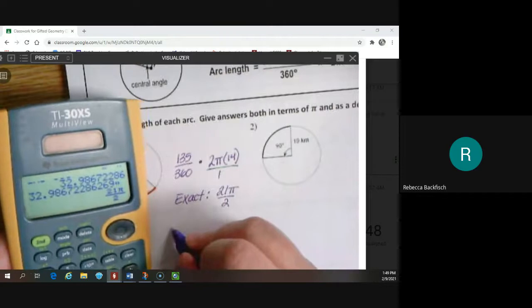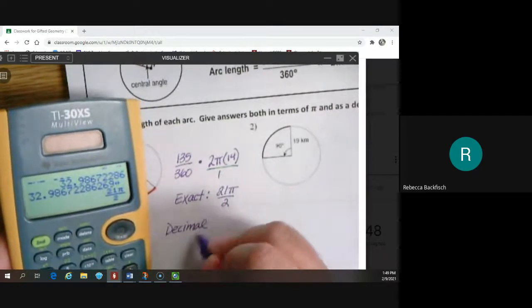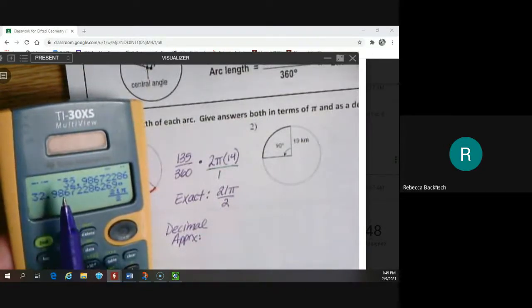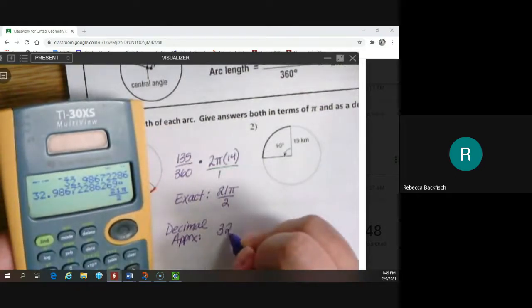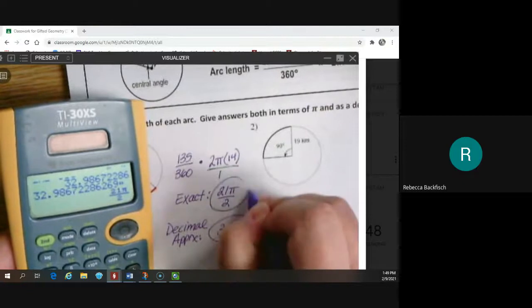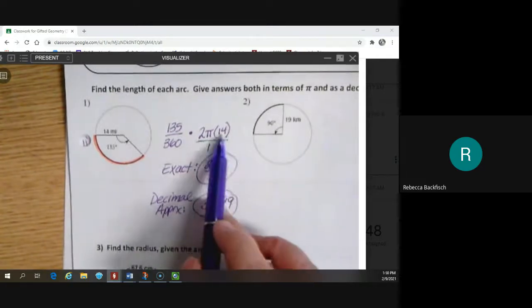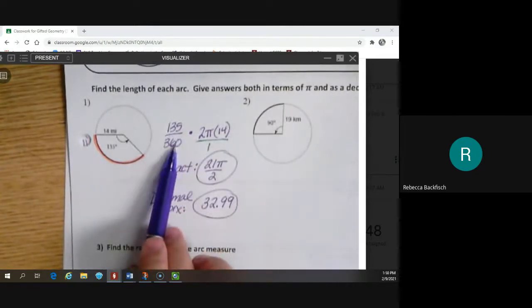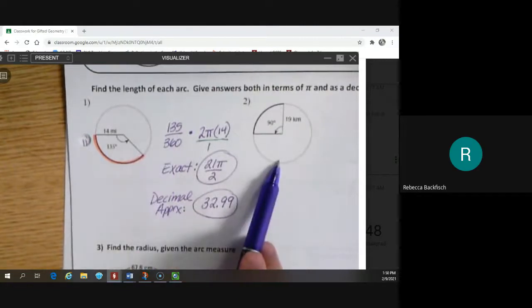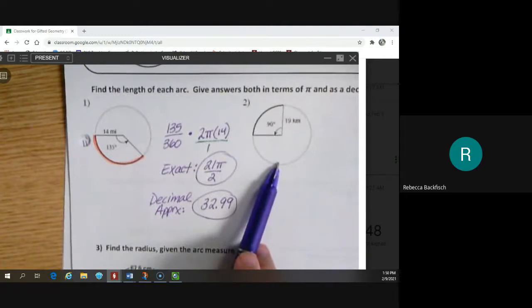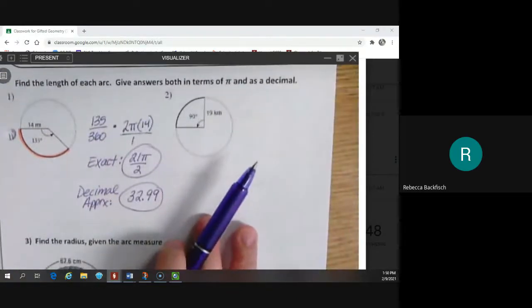But usually it'll give you both directions. So my exact answer here is 21 pi over 2. My approximate answer or my decimal approximation is 32.99. Two different ways of writing the same number, basically. So really all we did was we just said the circumference is this. I want this sized piece of it. So we're going to do the same thing over here. What size piece of it are we taking on number 2?